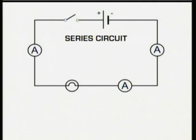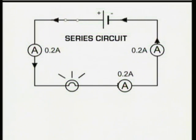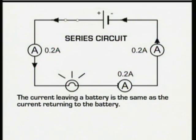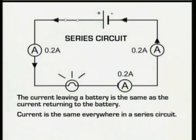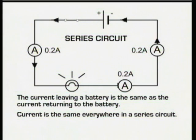Here's a simple circuit with a battery, a switch and a lamp connected in series. When the switch is closed, a current begins to flow, pushed around the circuit by the battery. The current leaving the battery is the same as the current returning to the battery. Because all the components in the circuit are connected one after the other, in series, the current is the same everywhere in the circuit — in this case, 0.2 amps.